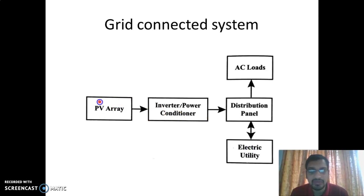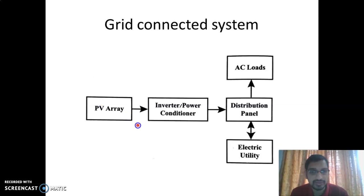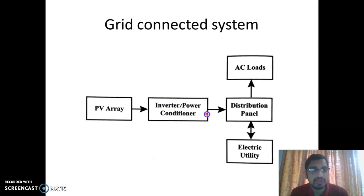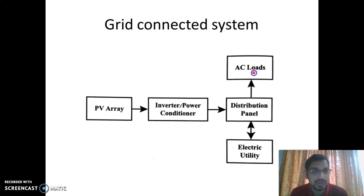The main function of the PV array is to generate electricity from sunlight. This electricity is in DC form, so we convert it into AC using an inverter or power conditioner. The AC output from the inverter is then supplied to the AC loads.